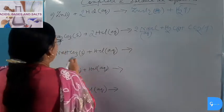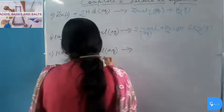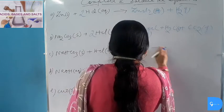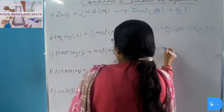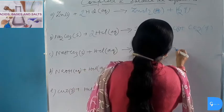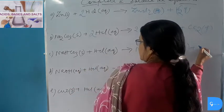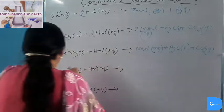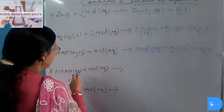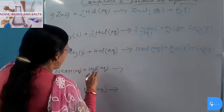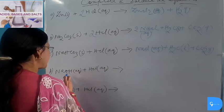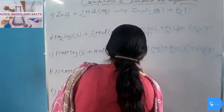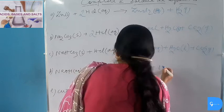Sodium Hydrogen Carbonate reacts with dilute Hydrochloric Acid: NaHCO₃ + HCl → Sodium Chloride (aqueous) plus Water (liquid) plus Carbon Dioxide gas. Sodium Hydroxide reacts with dilute Hydrochloric Acid — this is an acid-base neutralization reaction: NaOH + HCl → Sodium Chloride (salt) plus Water.